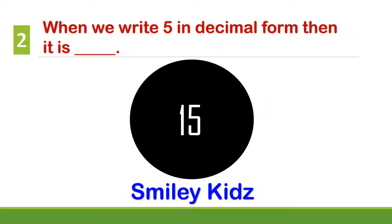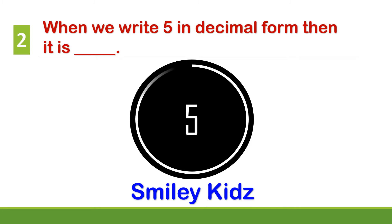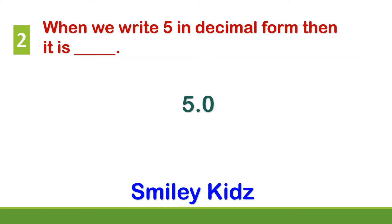Question number 2. When we write 5 in decimal form, then it is? Your time starts now. Your time is up. The correct answer is 5.0. When we write 5 in decimal form, it is 5.0.